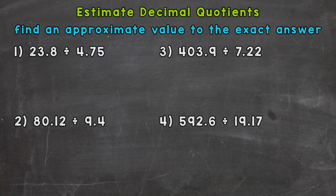Let's jump into number one: 23.8 divided by 4.75. The first strategy is to look at the divisor — the number we're dividing by — first. In this case it's 4.75, and I'm going to round that divisor to the nearest whole number. When we round to the nearest whole, we look at the ones place and check next door. 4.75 rounds to 5.